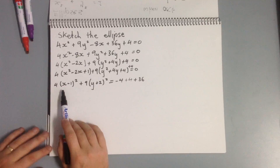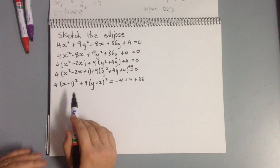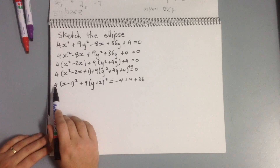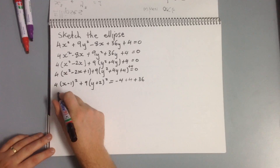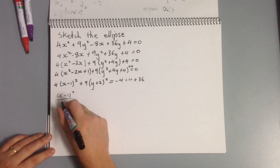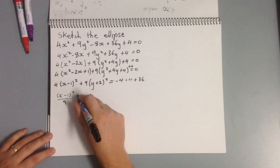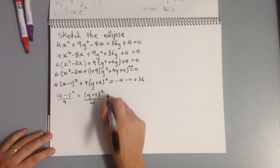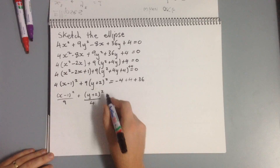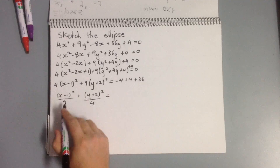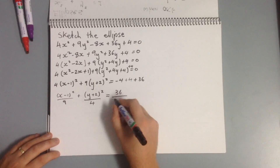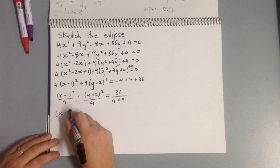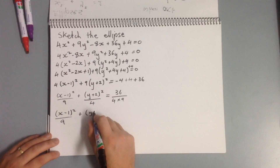Now in order to finish this off, we need to get into standard form. We divide through so the first term becomes x minus 1 squared over 9, and the second term becomes y plus 2 squared over 4. Our negative 4 and positive 4 cancelled out, and we're left with 36, which we divide by 4 and by 9. Quite nicely it all cancels out, and we end up with x minus 1 squared over 9 plus y plus 2 squared over 4 equals 1.